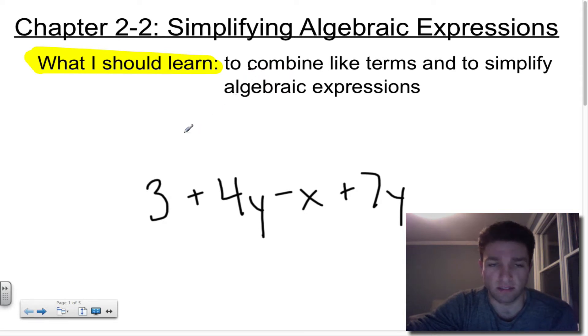So let's jump right into this and talk about first, what are terms? Terms, and there's a couple of different things that can be terms. You could have numbers, such as 3, you can have variables such as x, and then you can also have the product of a number and a variable, like 4y and 7y. All four things in this expression are examples of terms.